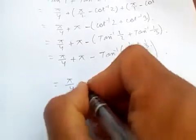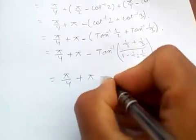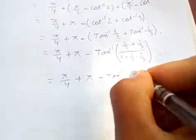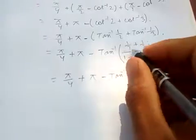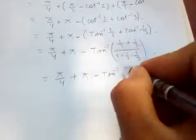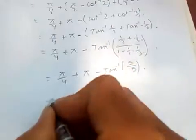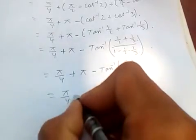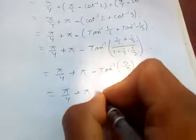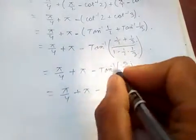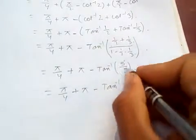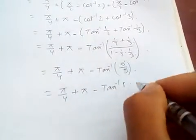Simplifying arctan((1/2 + 1/3) / (1 − 1/6)), we get arctan(5/5) = arctan(1). So the expression becomes π/4 + π − arctan(1).